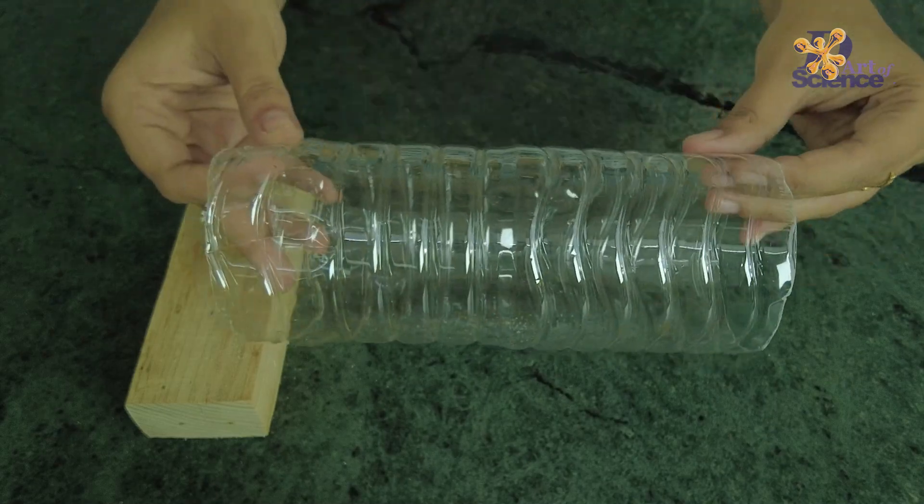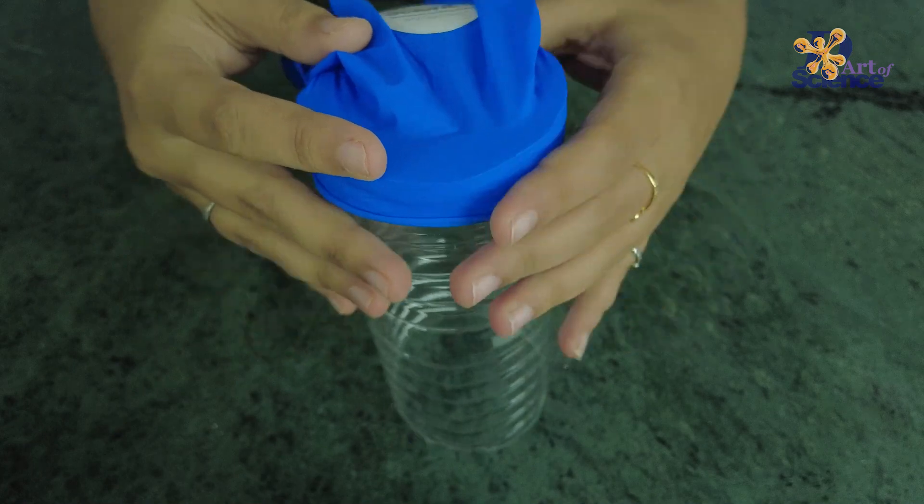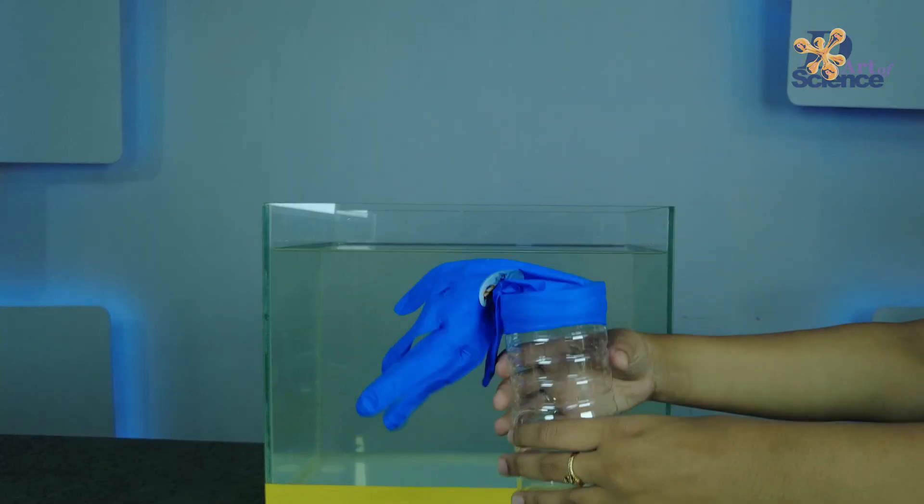Next, stretch and fit a glove on one of the sides of the bottle as shown, and that's it. Take the container of water and immerse the bottle as shown.